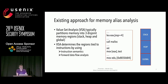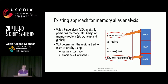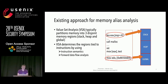Value Set Analysis (VSA) is the most popular approach for memory alias analysis. Technically, it first partitions the memory into three disjoint regions. Then it will determine the region tied to each instruction by using two strategies: instruction semantics and forward data flow analysis. For some instructions, VSA could easily complete region assignment based on instruction semantics. For example, VSA could assign instruction line 1 to the stack region because of the ESP memory, and link instruction line 5 to the global region because of its absolute address.